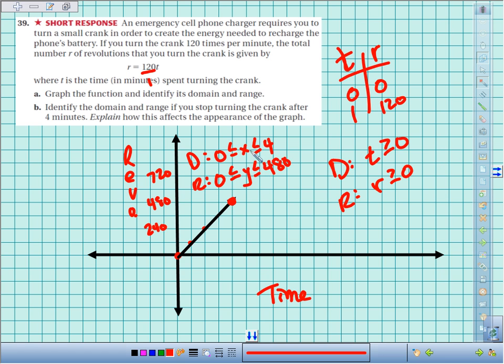How does it affect the appearance of the graph? It goes from being a ray that goes on forever to a line segment that stops on two ends.